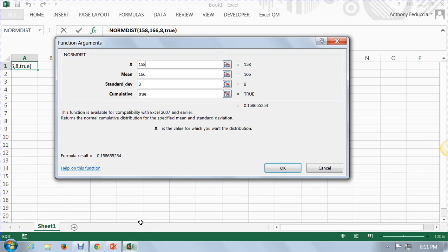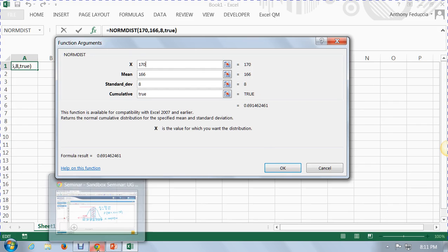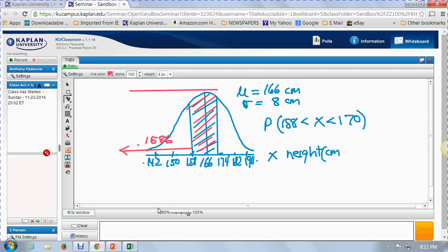Let's go back to Excel. And this time put in 170. That was our upper limit. Same, true. You notice that's 6914. Gives the answer right here. 0.6914. So we go back to our curve here and say this is 0.6914. So if we take the difference of those, 0.6914 minus 0.1586, subtract them. We find that this area that we're interested in right here, our probability is 0.5328.